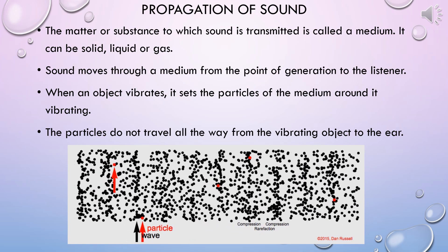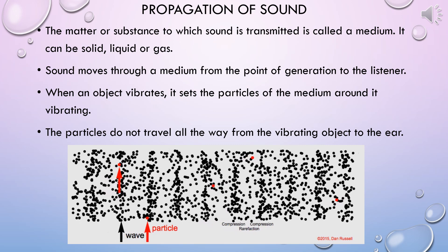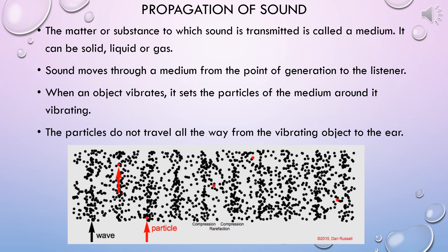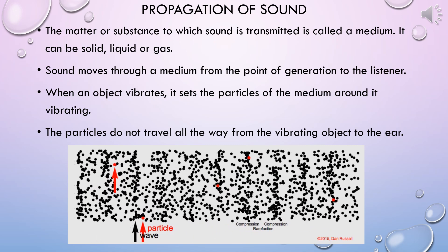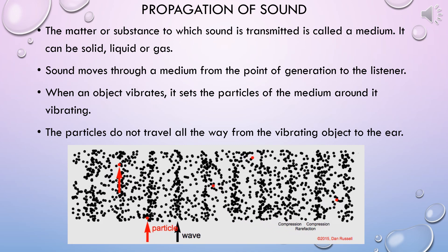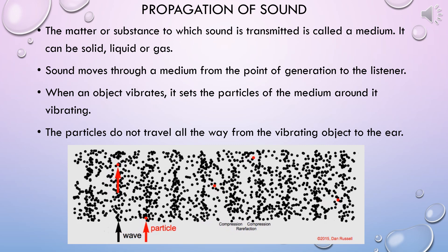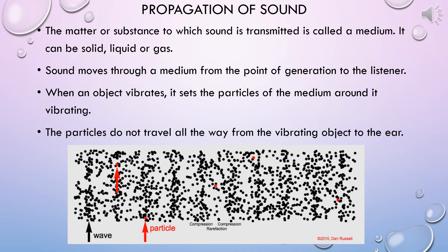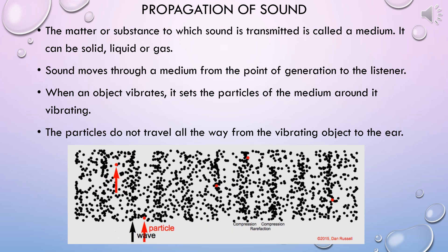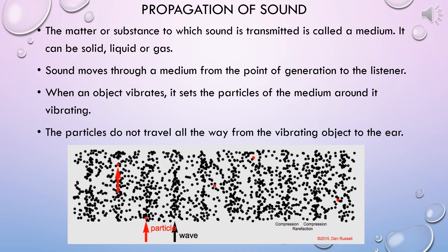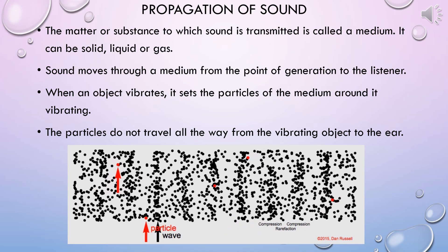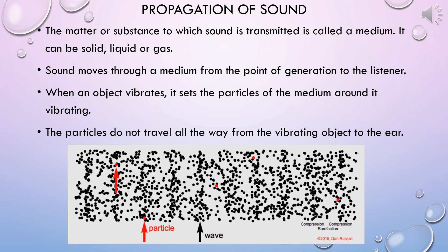Now let us understand propagation of sound — that means how sound travels in a medium. The matter or substance through which sound is transmitted is called a medium. It can be solid, liquid, or gas. Sound moves through a medium from the point of generation to the listener. When an object vibrates it sets the other particles of the medium around it vibrating. The particles do not travel all the way from the vibrating object to the ear.